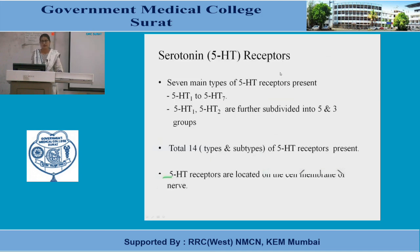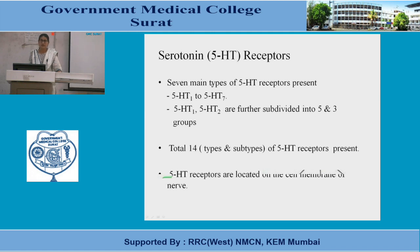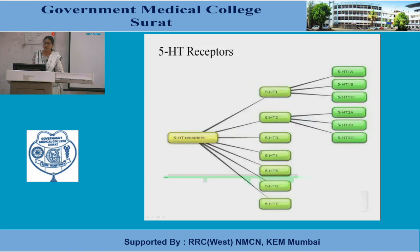Now we come to the receptors of 5-hydroxytryptamine. There are 7 main types of 5-hydroxytryptamine receptors, from 5-HT1 to 5-HT7. 5-HT1 and 5-HT2 are further divided into 5 and 3 groups respectively, giving a total of 14 subtypes. These receptors are located on the cell membrane of nerves. The subtypes include 5-HT1A, 1B, 1D, 1E, 1F; 5-HT2A, 2B, 2C; and then 3, 4, 5, 6, and 7.